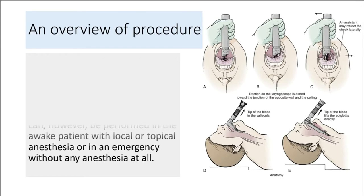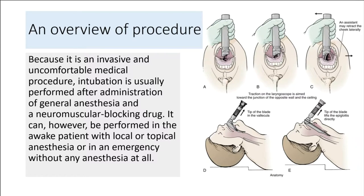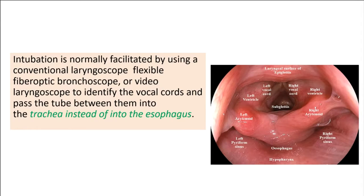Because it is an invasive and uncomfortable medical procedure, intubation is usually performed after administration of general anesthesia and a neuromuscular blocking drug. It can, however, be performed in the awake patient with local or topical anesthesia, or in an emergency without any anesthesia at all. Intubation is normally facilitated by using a conventional laryngoscope, flexible fiberoptic bronchoscope, or video laryngoscope to identify the vocal cords and pass the tube between them into the trachea instead of into the esophagus.